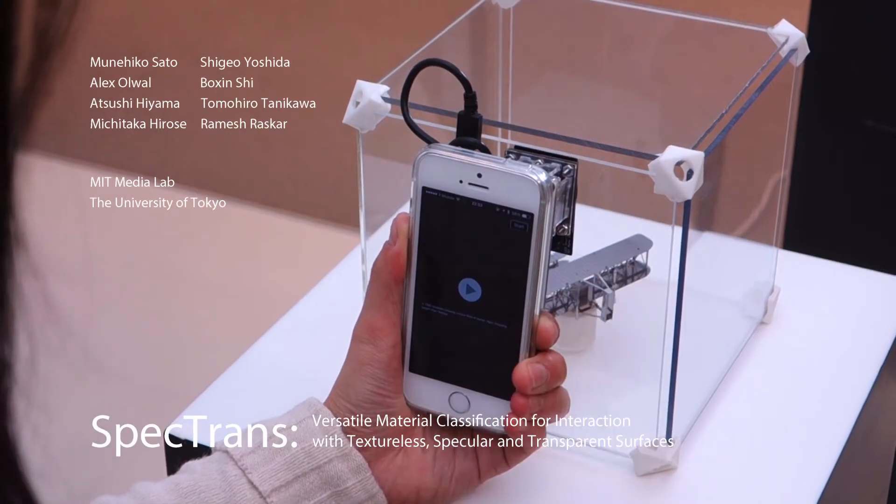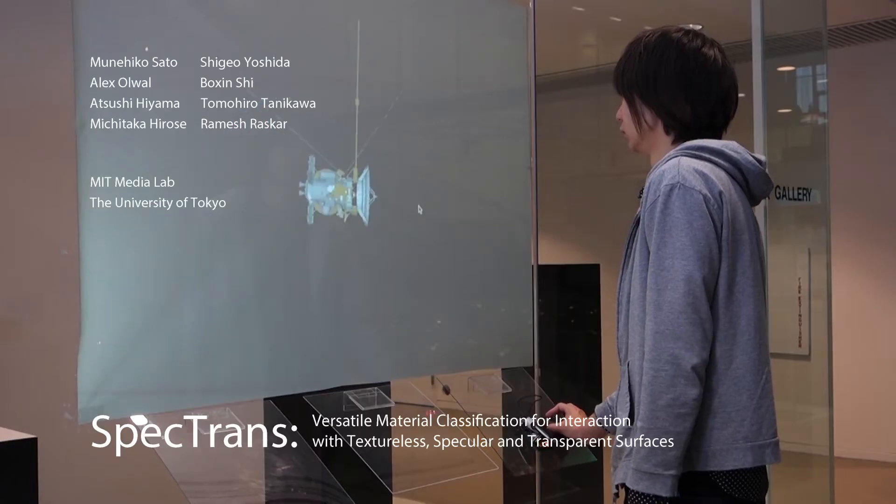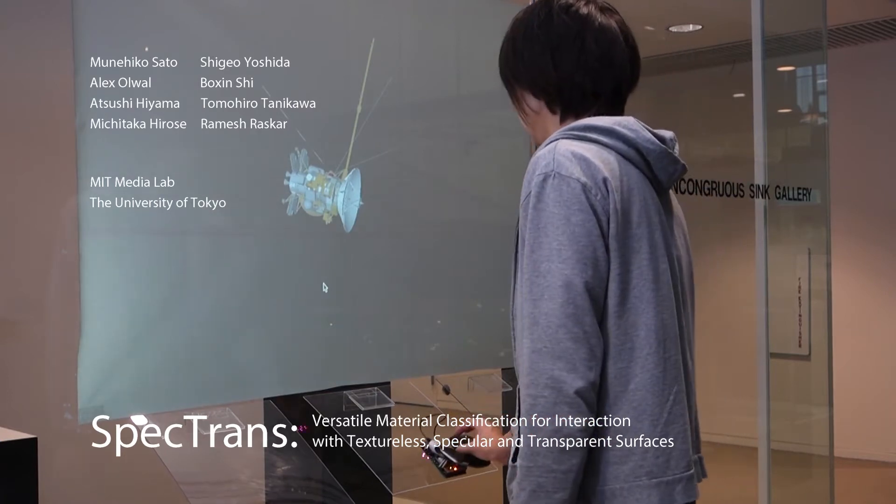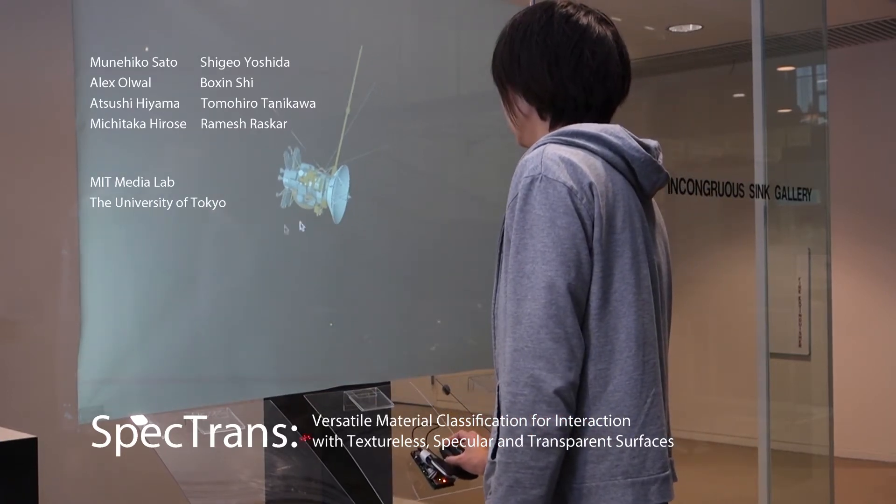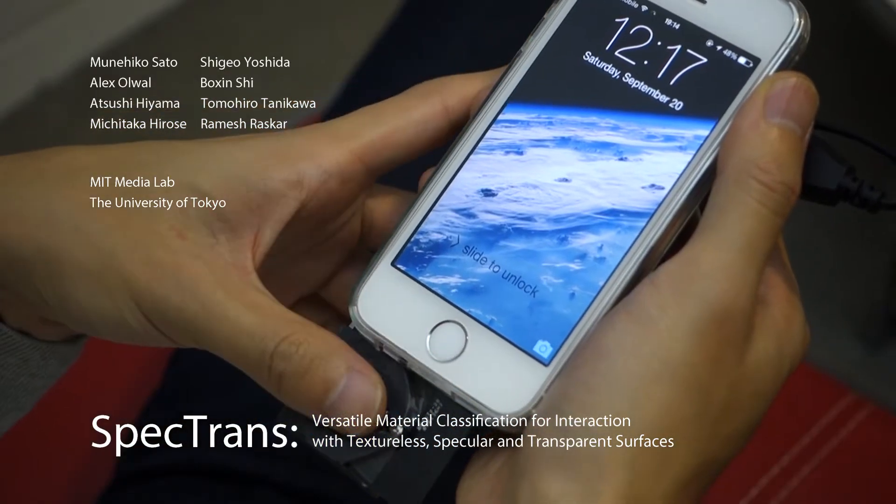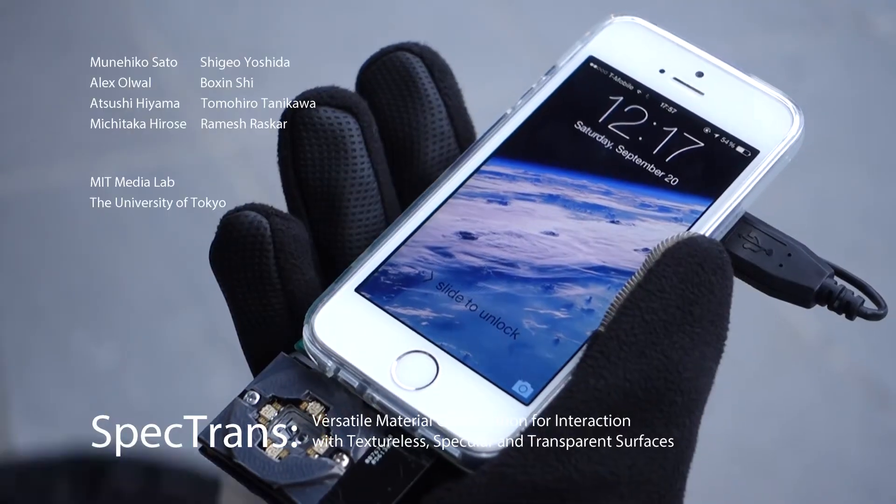We proposed SPECTRANS, a versatile material classification for interaction with a great diversity of materials, from common opaque materials, either diffuse or specular, to challenging textureless and transparent surfaces.